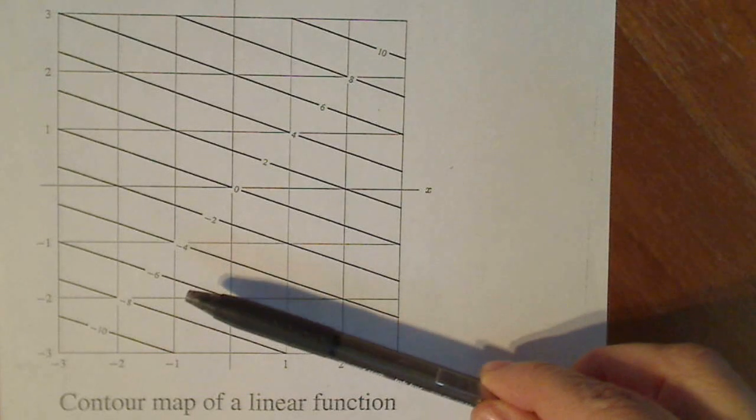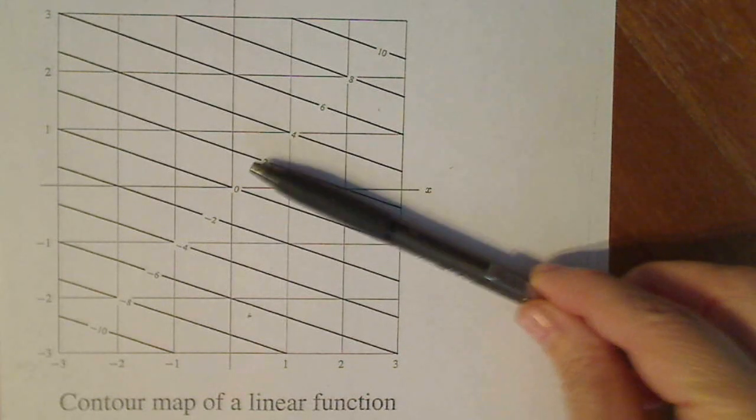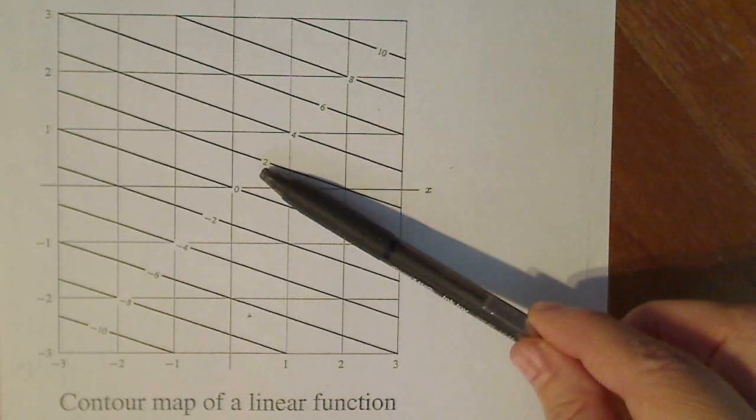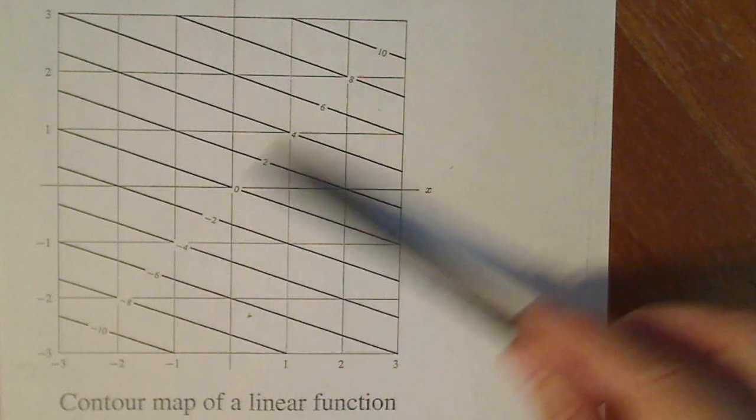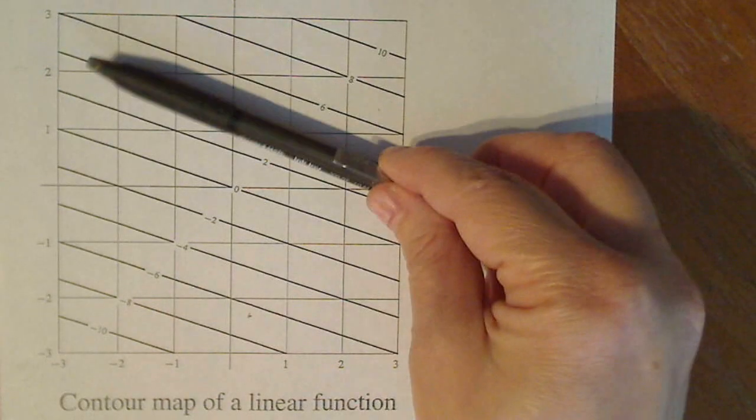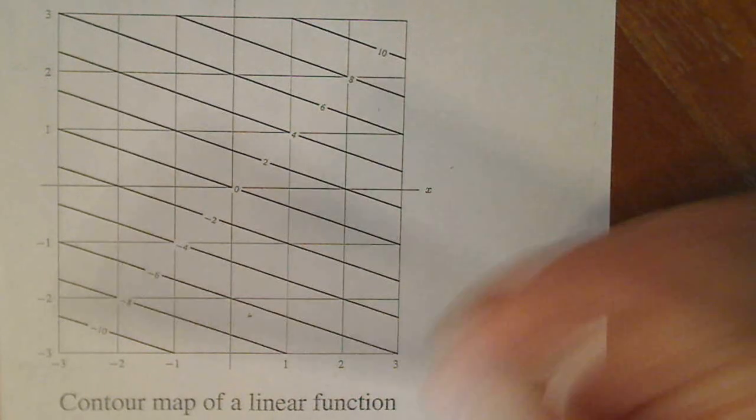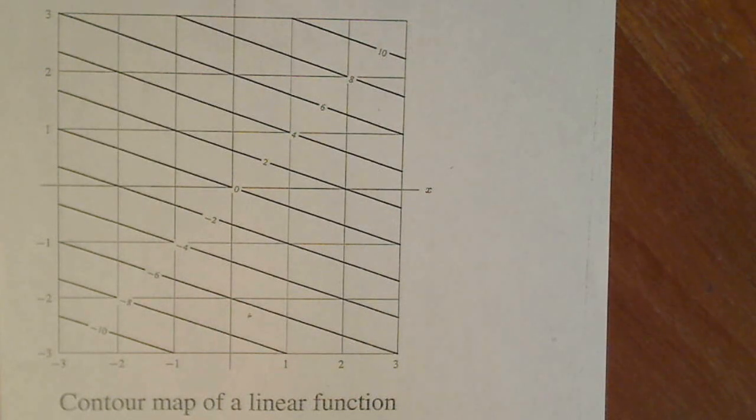Well, because the contours are all parallel lines equally spaced for equally changing Z's. So these Z's change from ten, eight, six, four, two, so each changing by two. And each of these are parallel lines. So parallel lines changing at the same rate in Z means that it's going to be a linear function or a plane.